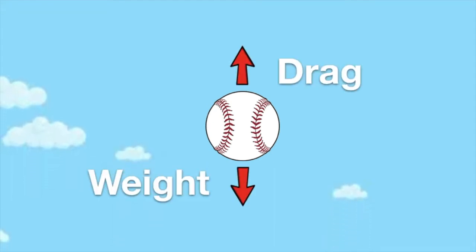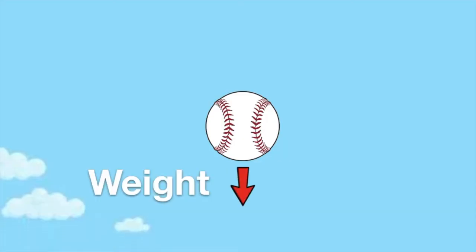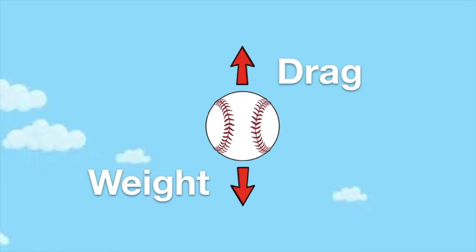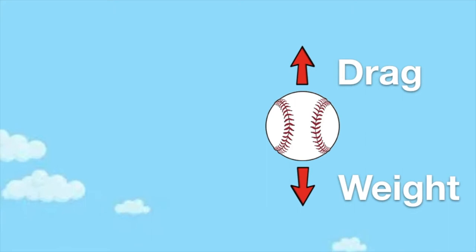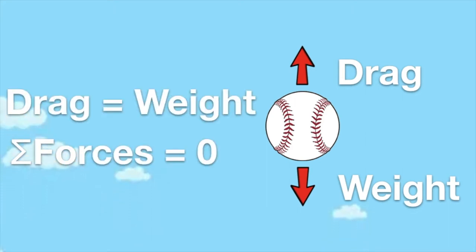When an object is dropped in an atmosphere, there are two forces in play: weight and drag. Weight is a constant force that is the result of gravity acting on an object — this force will accelerate the object toward the Earth. Drag is the force that works in the opposite direction of gravity and will work to decelerate the object as it's falling. When an object is dropped and has no velocity, drag is zero. But as velocity increases, drag will increase as well. Eventually, the increasing drag will match the weight of the object and the two forces will cancel each other, causing the object to fall at a constant velocity. This constant velocity is called terminal velocity.